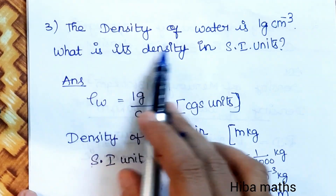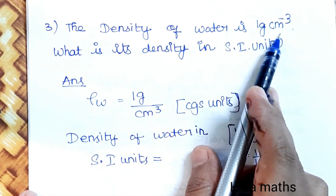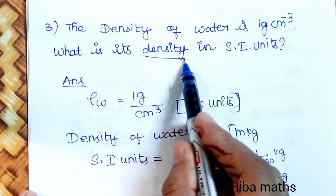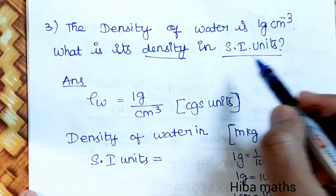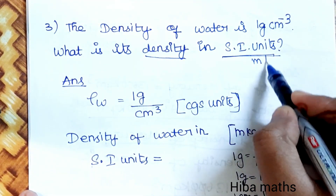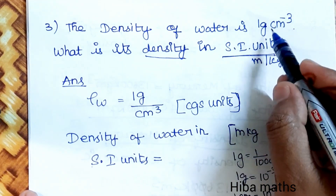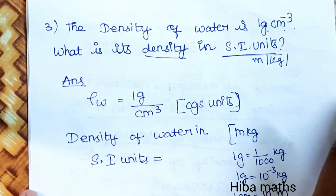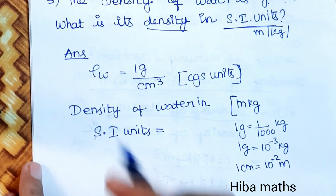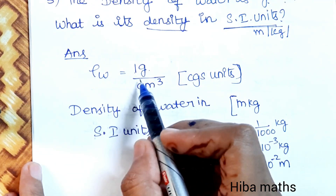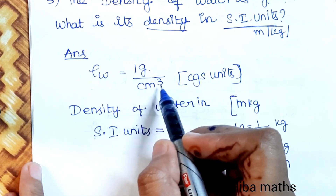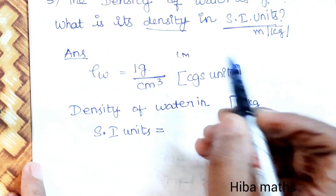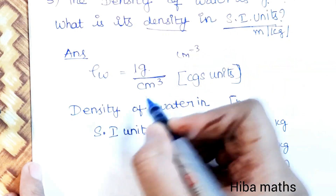Third question: the density of water is 1 gram per centimeter cube. What is its density in SI units? SI units use meters and kilograms, so we need to convert from grams per centimeter cube. Density of water is 1 gram per centimeter cube.